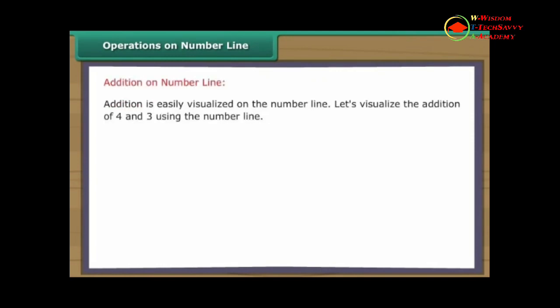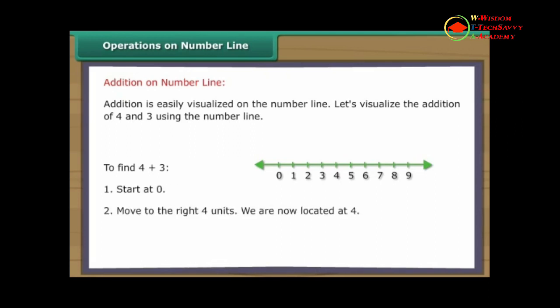Operations on number line. Addition is easily visualized on the number line. Let's visualize the addition of four and three using the number line. To find four plus three: one, start at zero. Two, move to the right four units. We are now located at four. Three, from four, move to the right three units. We are now located at seven. Thus, four plus three is equal to seven.